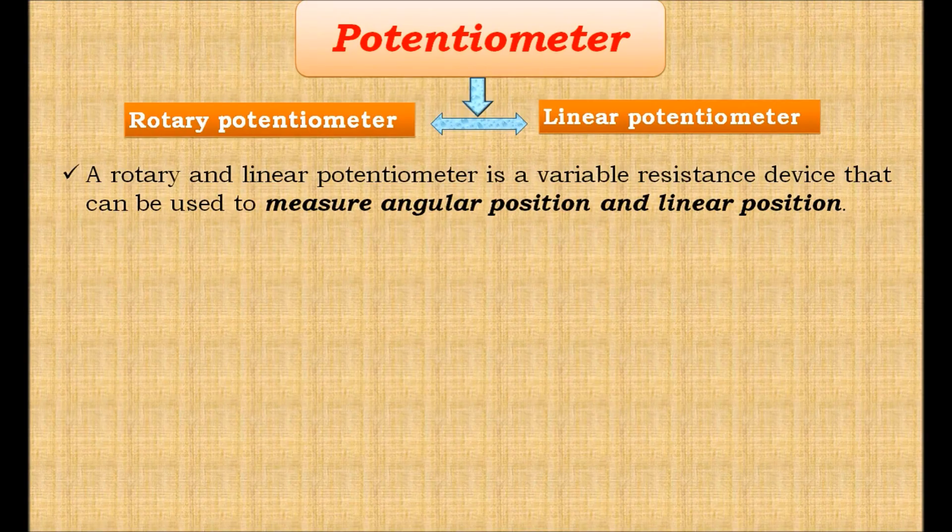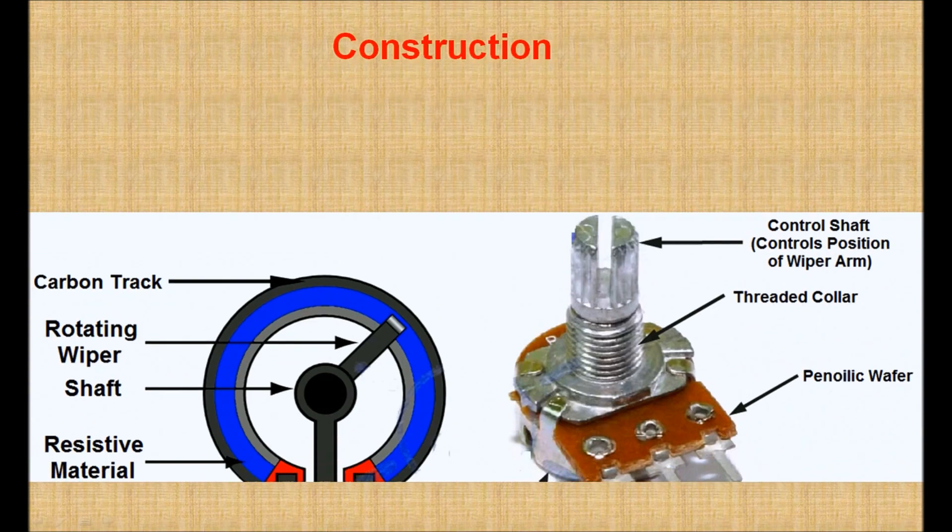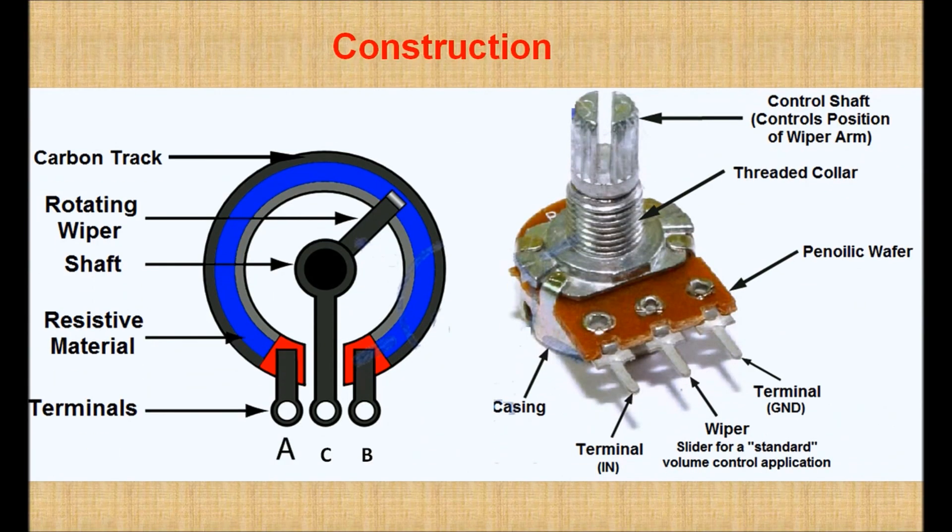Potentiometer construction: Potentiometers consist of a resistive element, a sliding contact called a wiper that moves along the element making good electrical contact, electrical terminals at each end of the element, a mechanism that moves the wiper from one end to the other, and a housing containing the element and wiper.